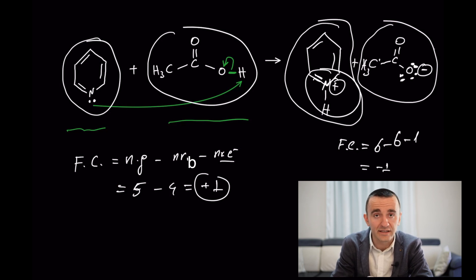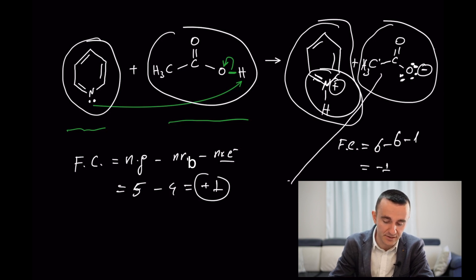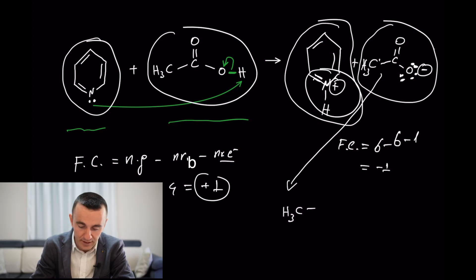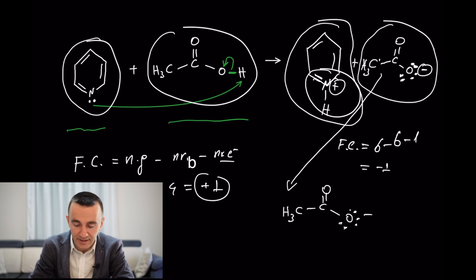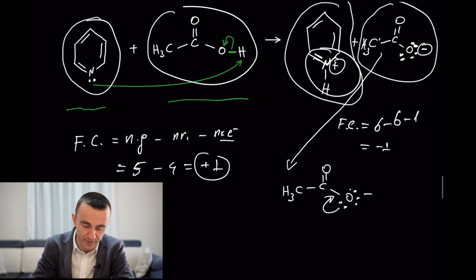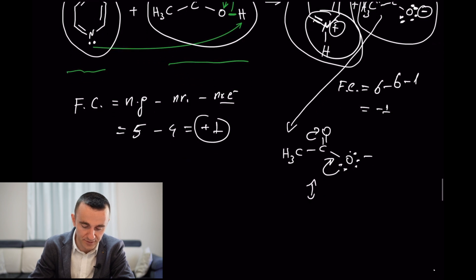Something related to resonance and acidity is the stability of the products. Acetic acid is considered a relatively strong acid compared to other organic acids because the acetate conjugate base can form additional resonance structures — by moving lone pairs and pi bonds — which makes the conjugate base more stable.